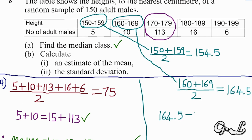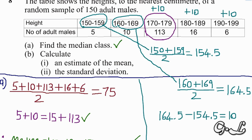The interval is 164.5 minus 154.5, which gives us 10. So instead of computing each midpoint separately, we simply add the interval of 10 to each successive value. For the class 160–169 the midpoint is 164.5, so we add 10 to get 174.5 for 170–179.